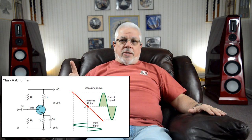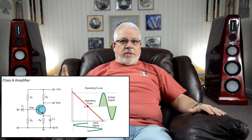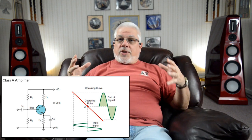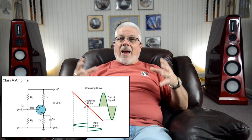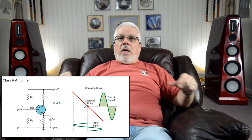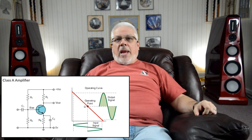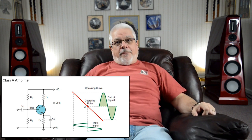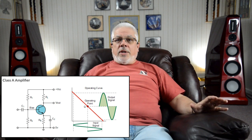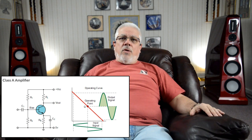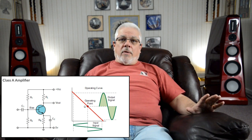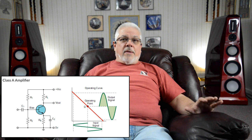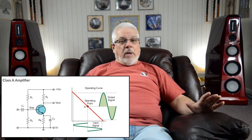In a single-ended or pure class A amplifier, one device — a tube or a transistor, or a group of similar devices working together as a single unit — is used to amplify and reproduce the entire output waveform. In such a circuit design, we usually have two important voltage references: the varying signal itself and ground.